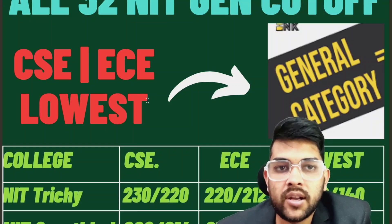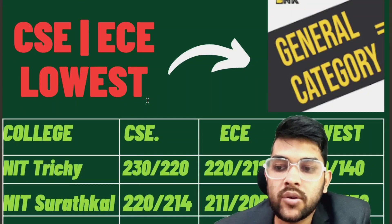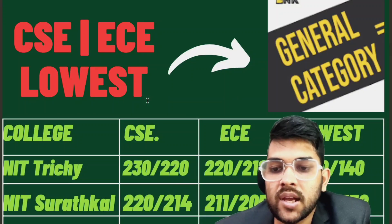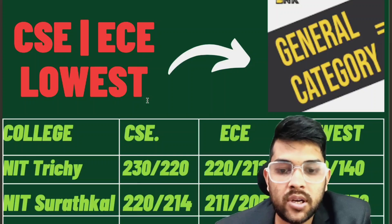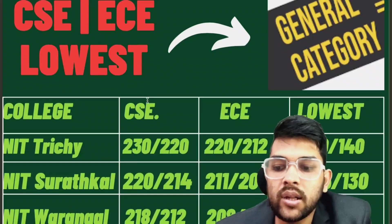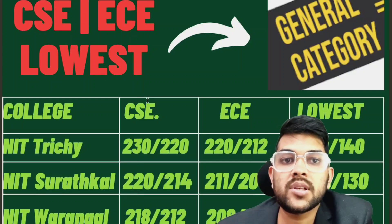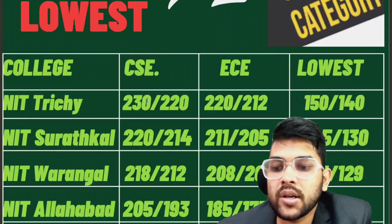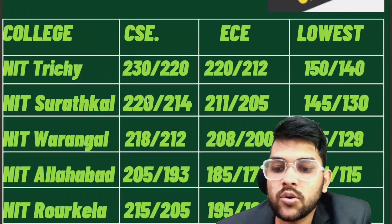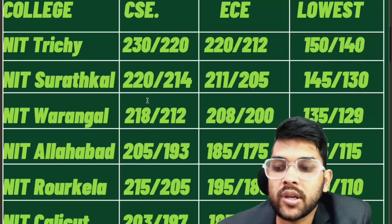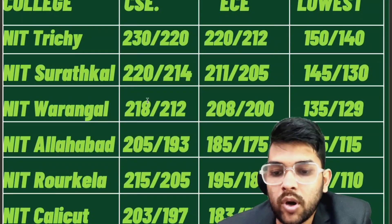For NIT Suratkal, 220 and 214 marks are required for CSC, and for EC 211 and 205; the lowest branch requires 145 and 130 marks. For NIT Warangal, 218 and 208 for CSC; 135 marks — male before the slash and female after the slash. For NIT Allahabad, 205 and 185, lowest 125. For NIT Rourkela, 215 and 195, lowest 120. For NIT Calicut, 203 and 183, lowest 118.